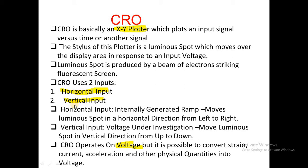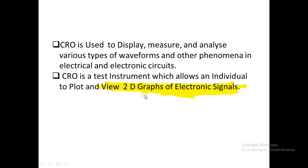Horizontal input moves the luminous spot from left to right, whereas vertical input moves the luminous spot from up to down. So CRO has two inputs, it is an XY plotter, it is a 2D device, and CRO operates on voltage. However, it is possible to convert strain, current, acceleration, and other physical quantities into voltage. By using CRO we can view 2D graphs of electronic signals and CRO is used to display, measure, and analyze various types of waveforms in electrical and electronic circuits.